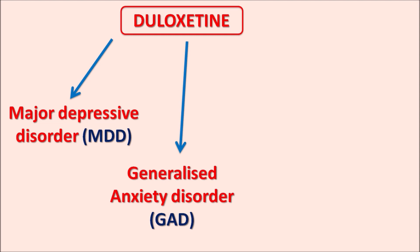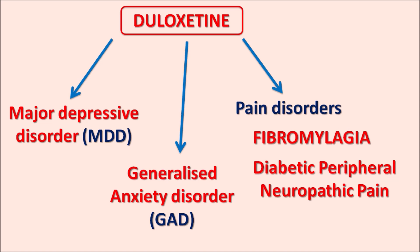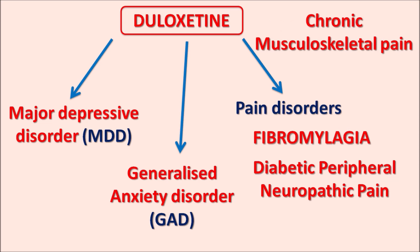Another clinical indication of Duloxetine is in painful conditions. Since this drug is an SNRI, Duloxetine can be used for pain disorders such as fibromyalgia — similar to venlafaxine, which is also an SNRI used in fibromyalgia. Another important indication is diabetic peripheral neuropathic pain, where neuropathic pain is produced within the neurons without any external damage. Duloxetine can also be used to treat chronic musculoskeletal pain. In this way, Duloxetine is used as both an antidepressant and anxiolytic, and it can also control pain conditions associated with the central nervous system.